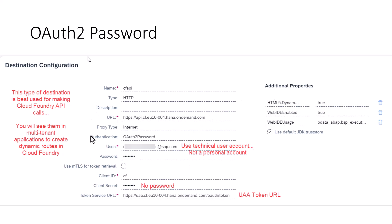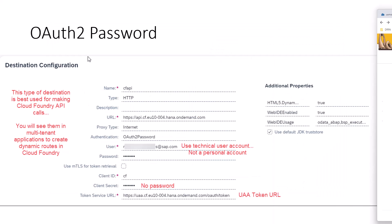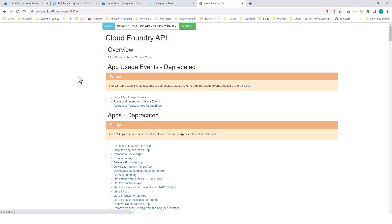This is how you would set up the destination itself. You would use the client ID as CF, and the client secret — there is no password here. You would use a technical user account for your username and password, and then you would use the UAA token URL. With the help of this authentication mechanism, you could go ahead and call the Cloud Foundry API. If you search on Google for Cloud Foundry API, then you can make calls to these Cloud Foundry APIs.